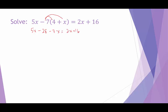We still have more cleanup to do on the left-hand side. We have a 5x and a negative 7x. When we combine those, that would be negative 2x minus 28 equals 2x plus 16.